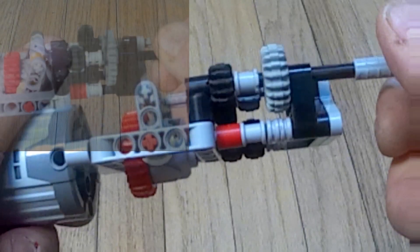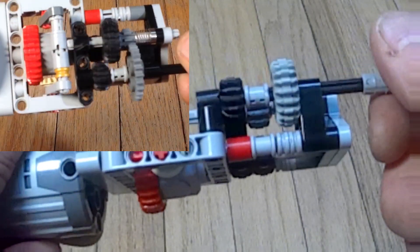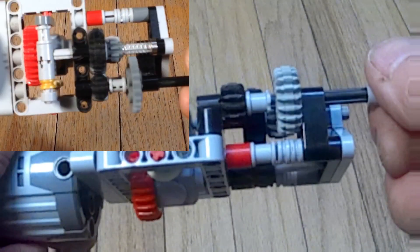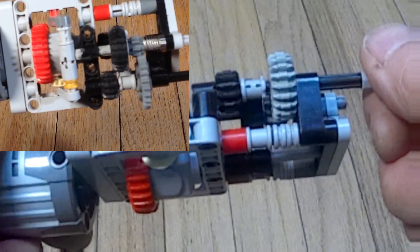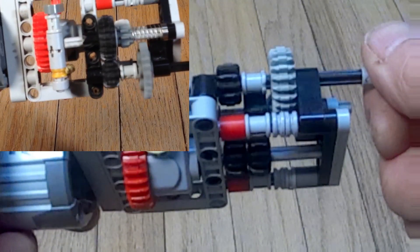The gear combinations I've been using make a low gear ratio of three to one. The high gear is one to one. You can use some different gear combinations for different output ratios.